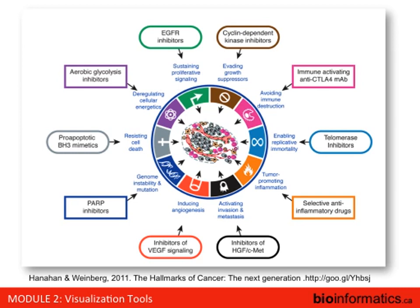Hanahan and Weinberg wrote a classic review about ten years ago, and then a next generation of it just last year, called the Hallmarks of Cancer. They very nicely summarize the expertise of the field, the various types of treatments that are available, and the various types of generalizations that one can make about cancer. I definitely invite you to have a look at that paper if you're interested in an overview of this field.